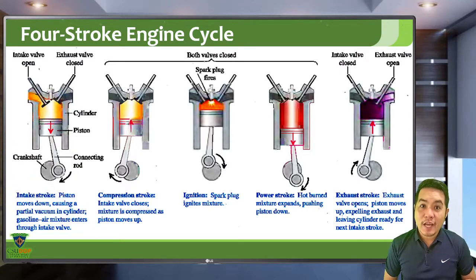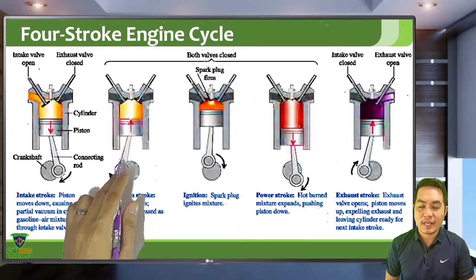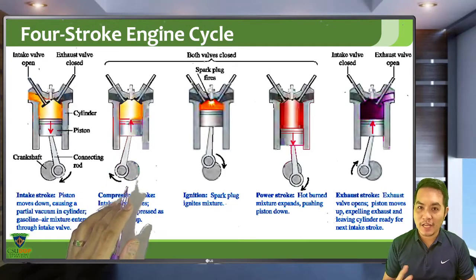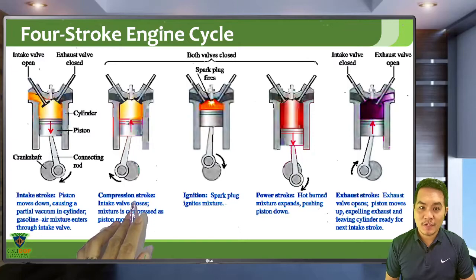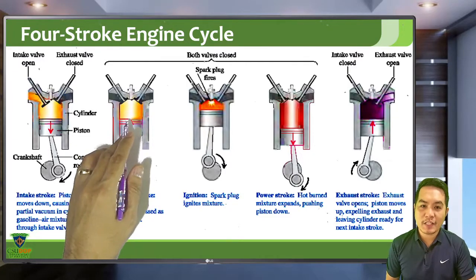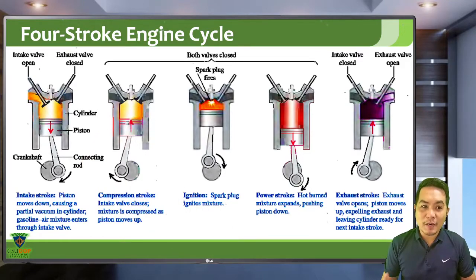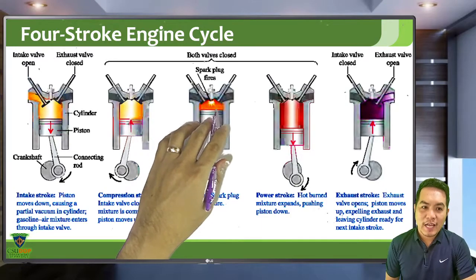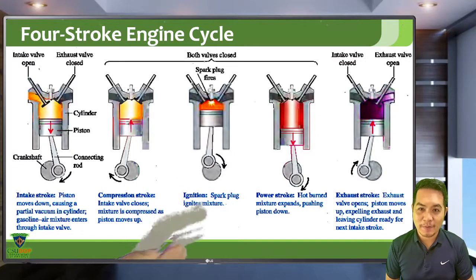After the intake stroke takes in the air and fuel mixture, it is then compressed adiabatically — without any heat involved — during the compression stroke. When it is compressed, the pressure increases, and during this high-pressure stage a spark plug ignites the air and fuel mixture. There is no volume change during the ignition, so no stroke happens at that point.